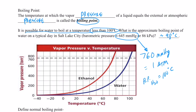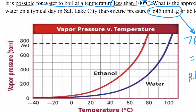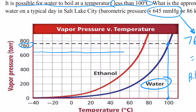As atmospheric pressure increases above the surface of a liquid, it's harder for bubbles to form, and therefore the boiling point increases. Looking at this graph, water is shown as the blue line. At 100°C, the vapor pressure of water is 760 mmHg. So when the vapor pressure of the liquid equals the atmospheric pressure, the liquid begins to boil. If we lower the pressure to about 650 mmHg, we can get water to boil at a lower temperature.